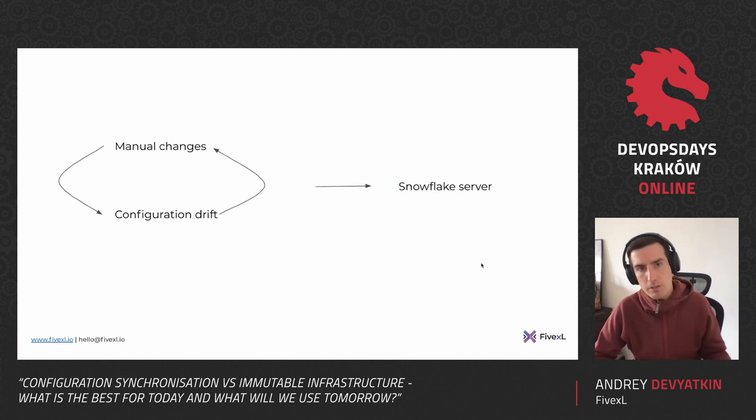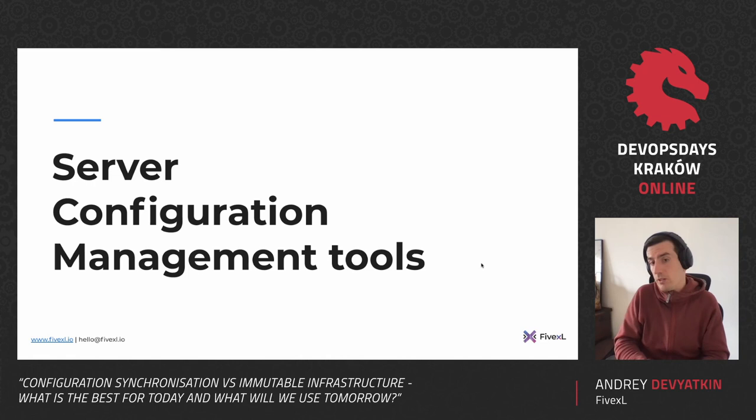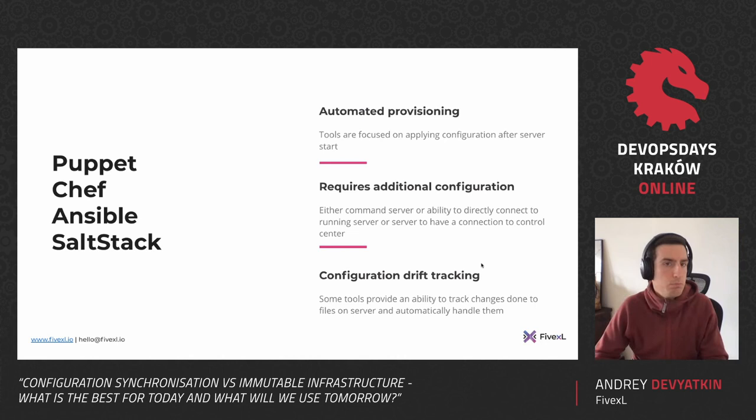This is how it's demonstrated: you do more manual changes, more configuration drift, eventually getting a snowflake server. People thought: doing it manually is bad, let's use tools. They came up with server configuration management tools such as Puppet, Chef, Ansible, SaltStack, and others. These tools automate provisioning and are focused on provisioning.